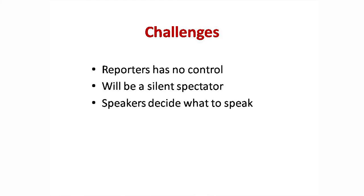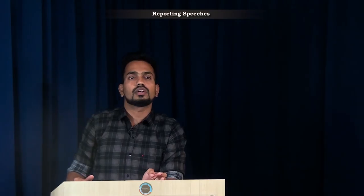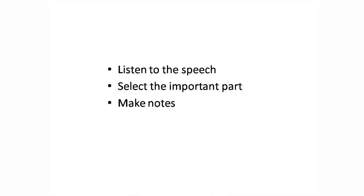At speeches, speakers themselves decide what to speak. The only option left to the reporter is to cover the content. The journalist has to listen to what is being said, selecting the important parts and making notes — definitely a challenge when there are multiple speakers and vivid content. It may seem a journalist has no control, but he can follow few steps to get information of his choice by covering the parts of the speech which are important for his audience.